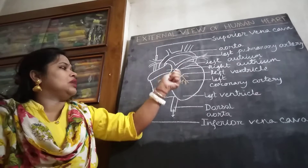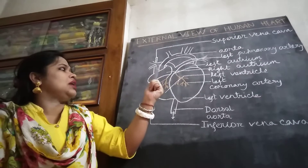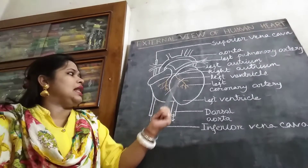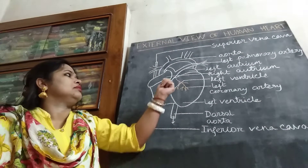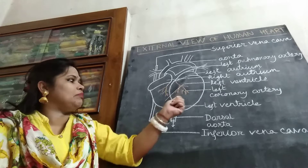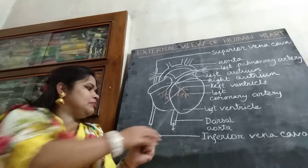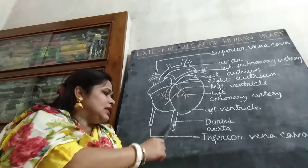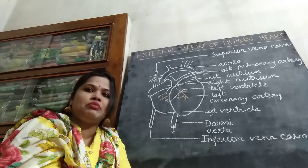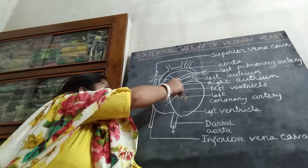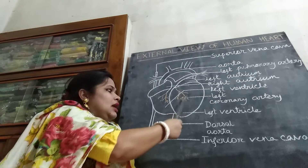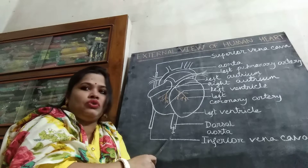This one is the aorta. The aorta originates from the left ventricle, encircles the heart, and passes from the back of the heart. In the name of the dorsal aorta, it goes to the different parts of the body, passing from the back side and continuing as the dorsal aorta.